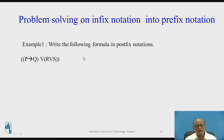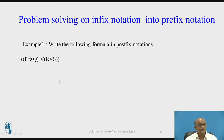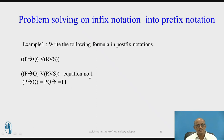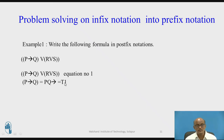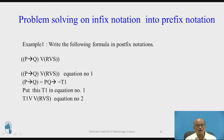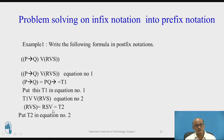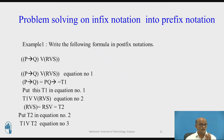Now let us convert the same formula into postfix expression, also called suffix expression. In suffix, the two operands come first followed by the operator. P conditional Q evaluated first: convert to suffix gives PQ conditional — intermediate result T1. Put T1 in the equation. Then R OR S: convert to postfix gives RS OR — that is T2. Put T2 in equation two, giving T1 OR T2, which converts to postfix as T1 T2 OR — equation number four.